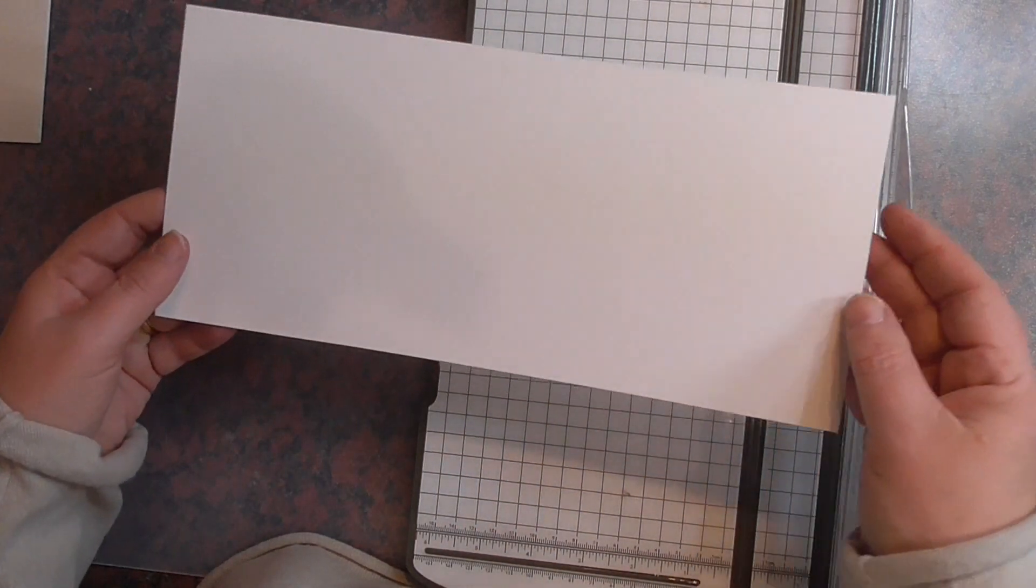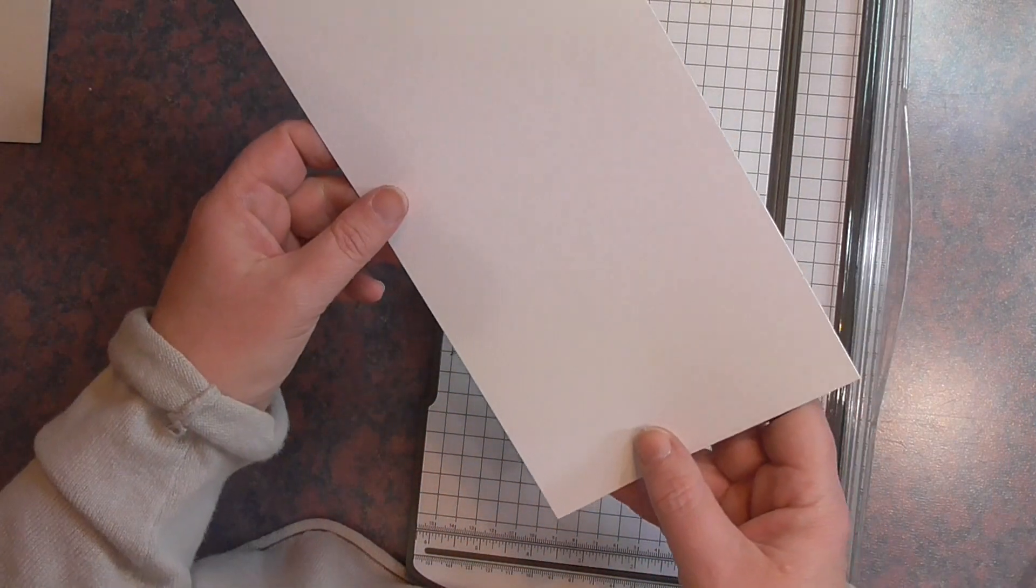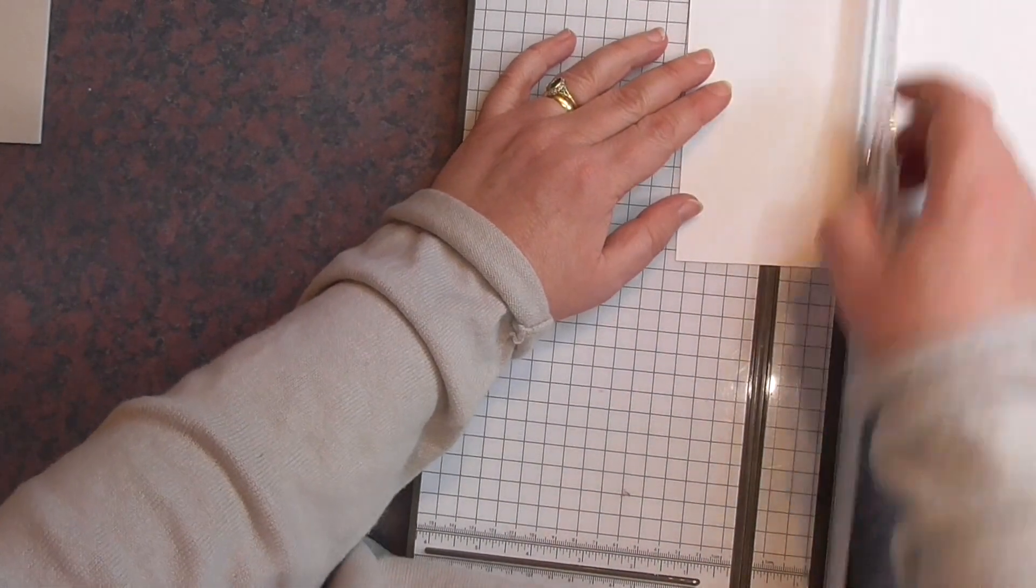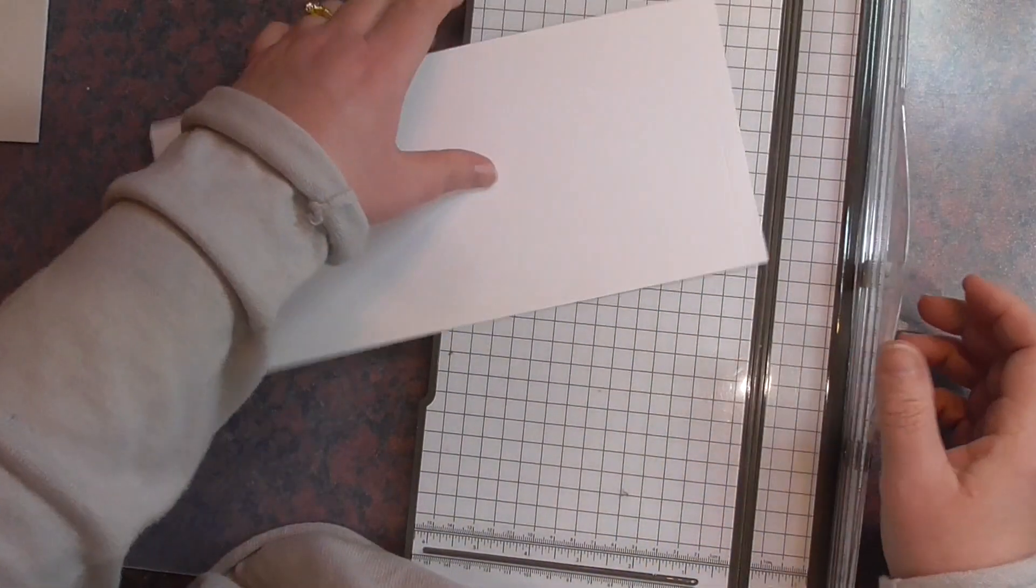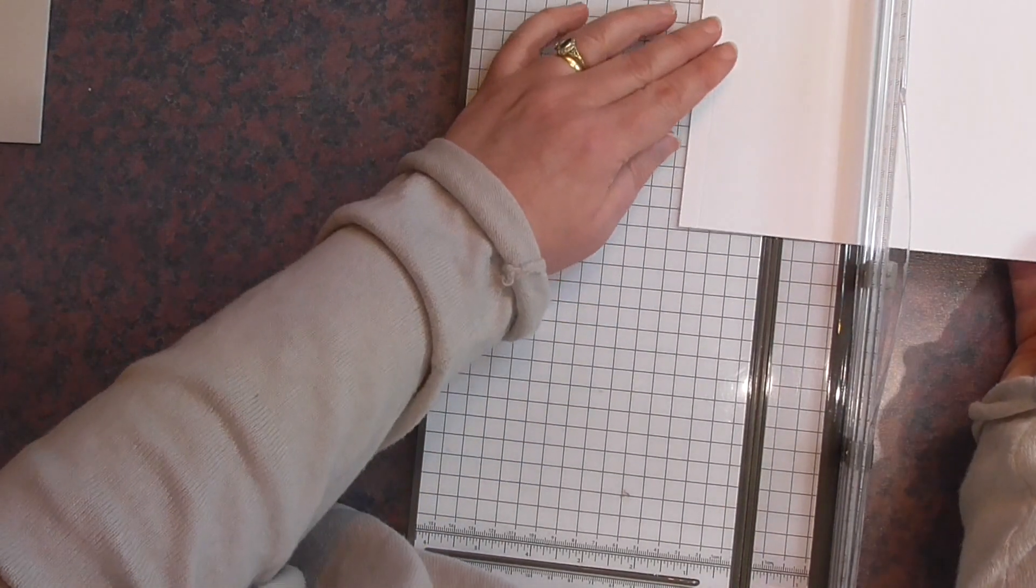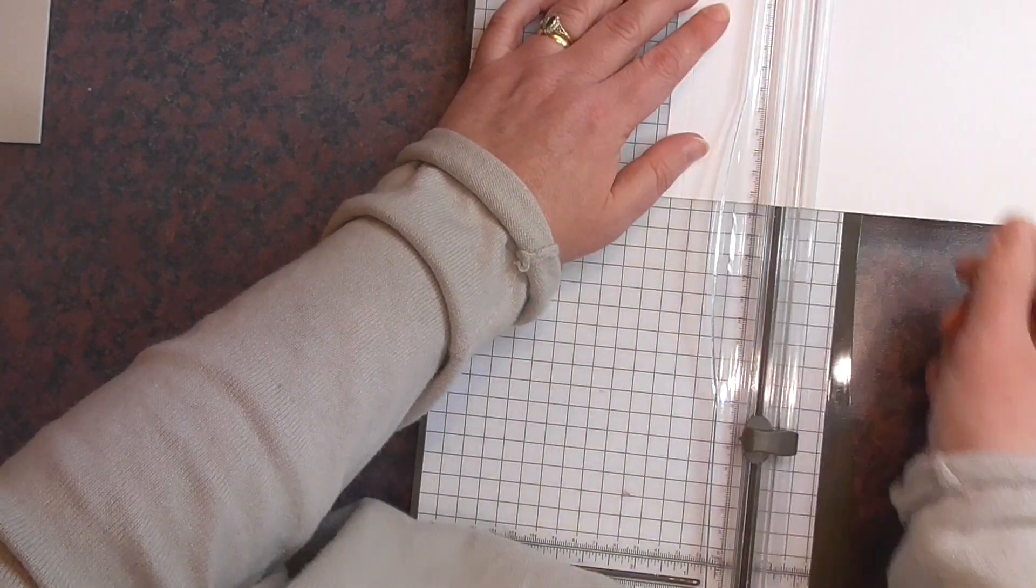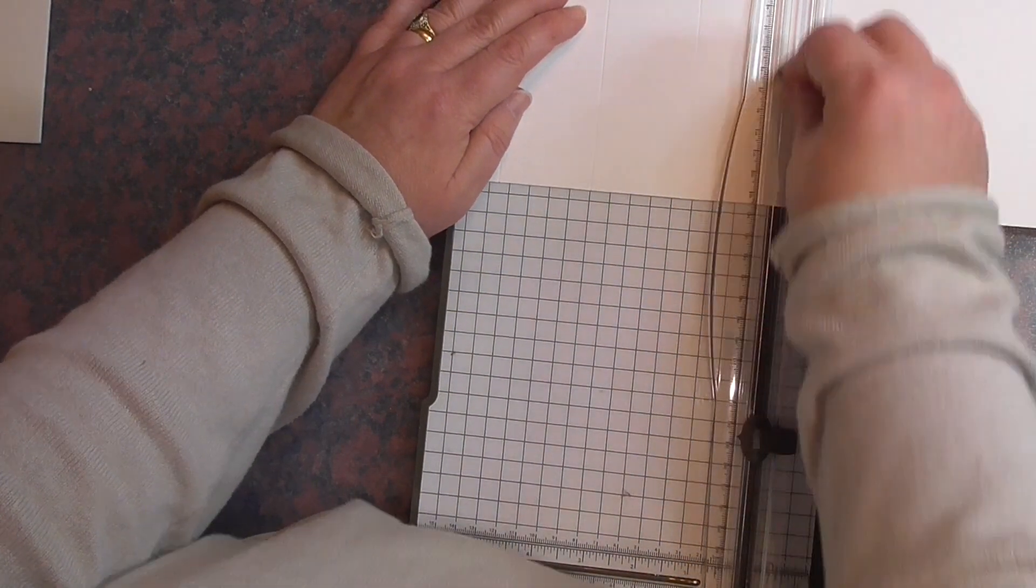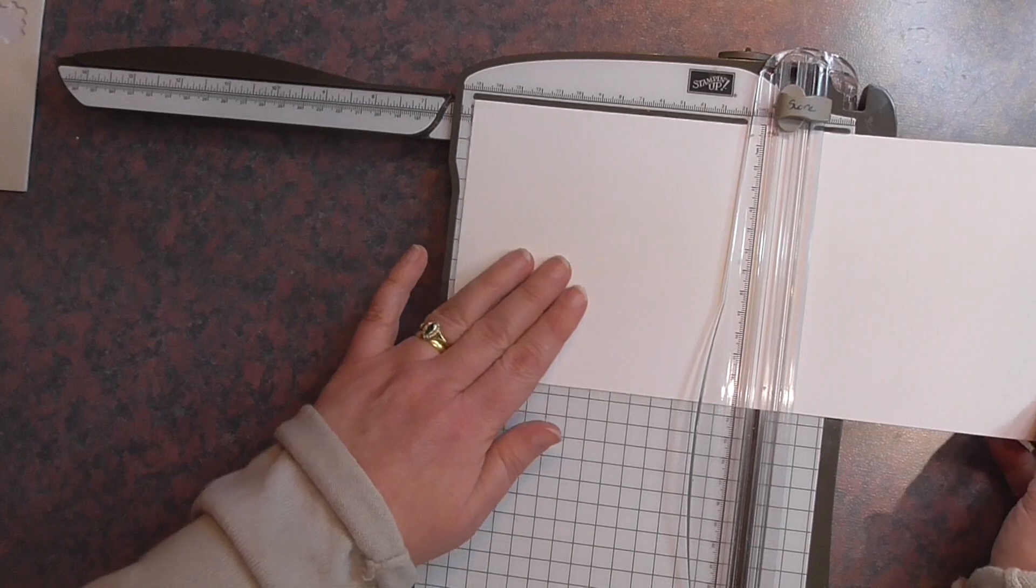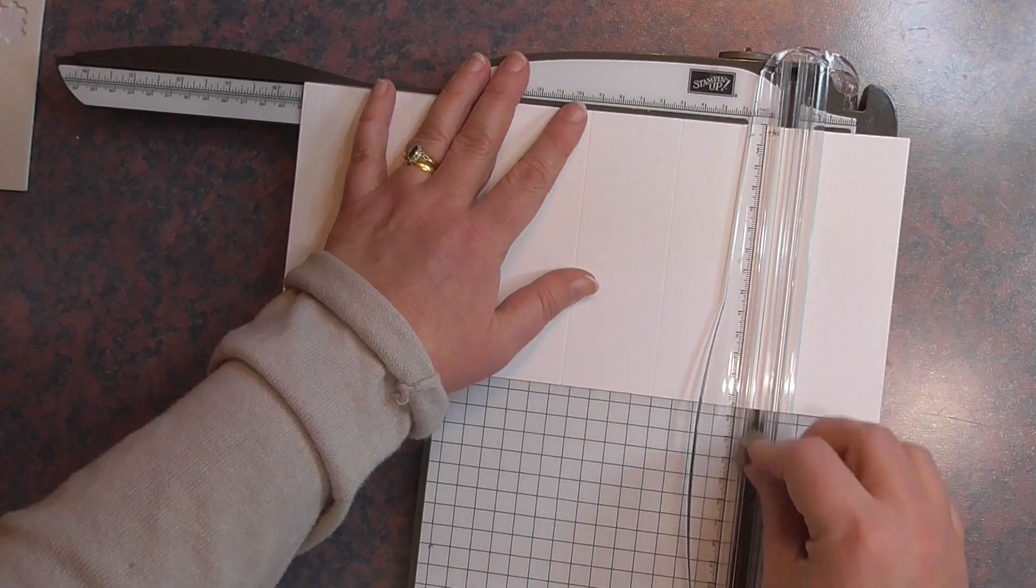First of all you need a piece of card that is 13 and a half centimeters by the full length of a sheet of A4. If you place it into your trimmer you want to first of all score it at one centimeter, which I found it easier to do this way first, and then just flip your card around and then come in at five and a half centimeters, ten centimeters and fourteen and a half centimeters. You'll need your full arm out here because you want to go further and then score at 19 centimeters and 24 centimeters.